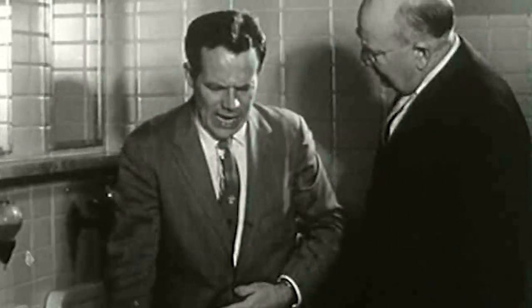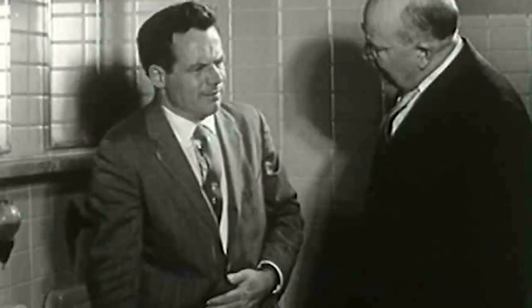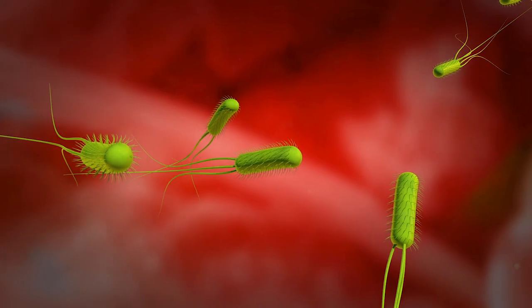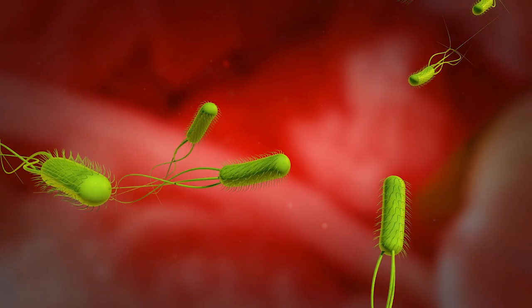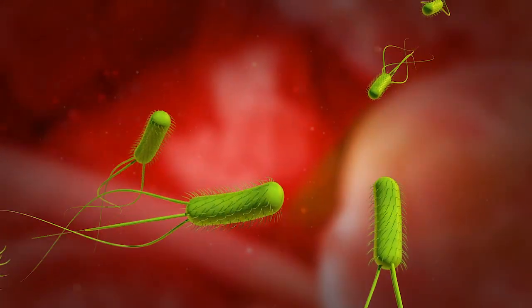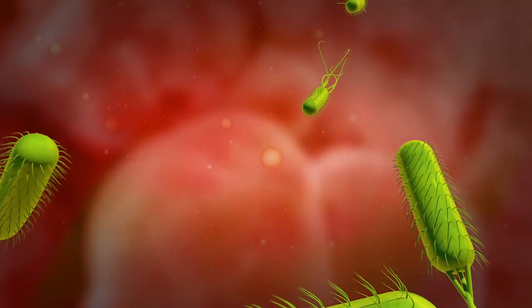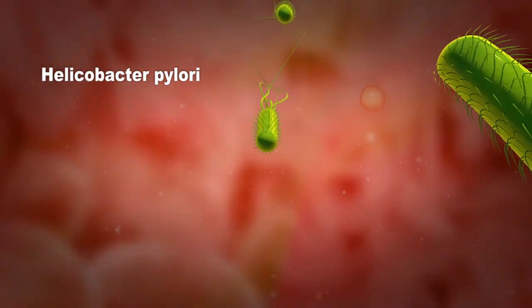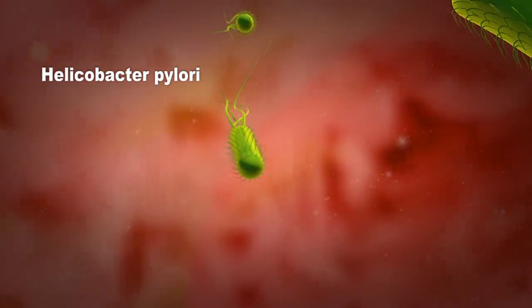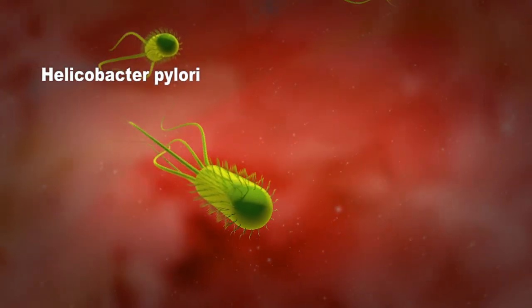Until the mid-1980s, it was widely believed that stress was the primary cause of stomach ulcers — until Australian scientists Dr. Barry Marshall and Dr. Robin Warren discovered a bacterium, Helicobacter pylori, that was present in the stomachs of patients with ulcers.